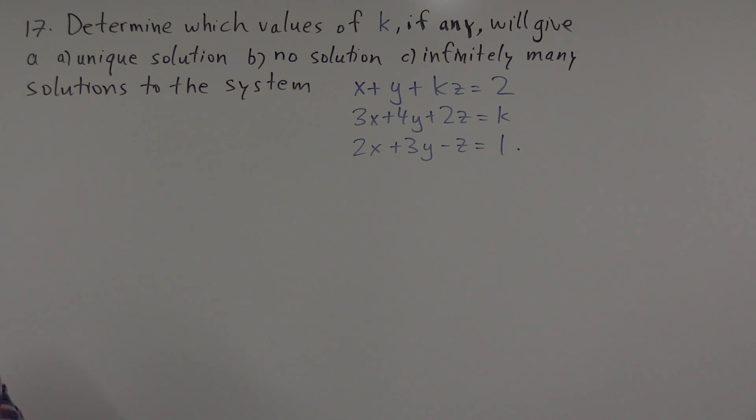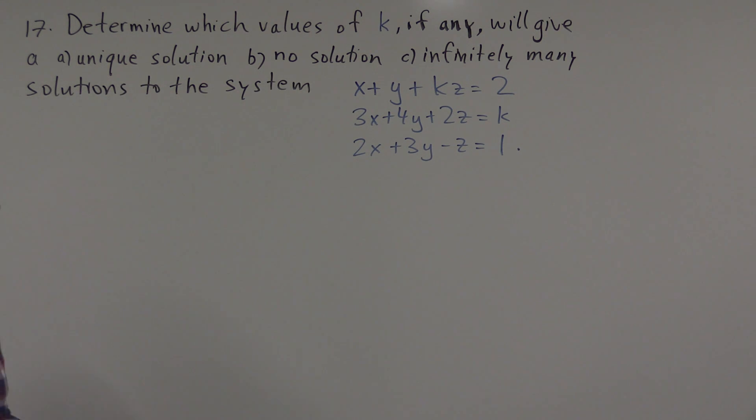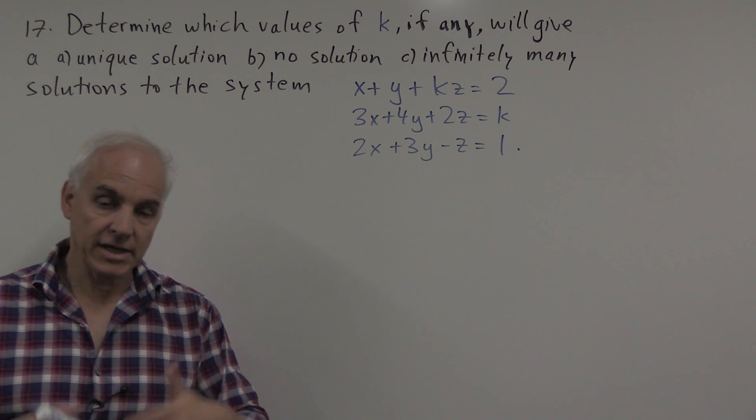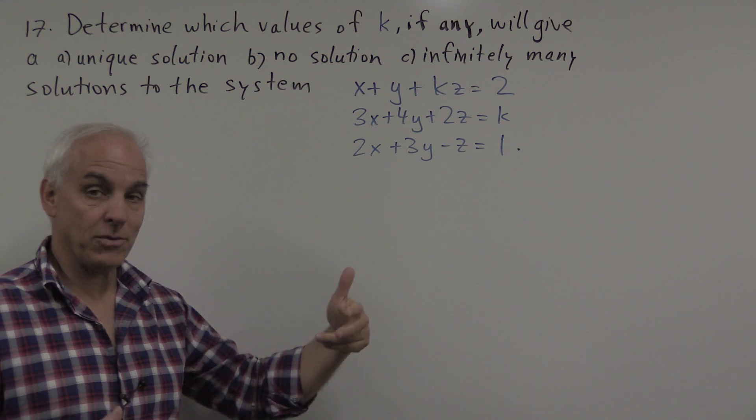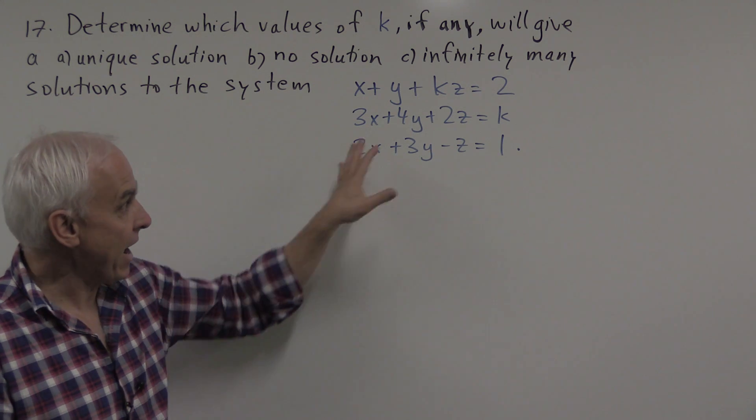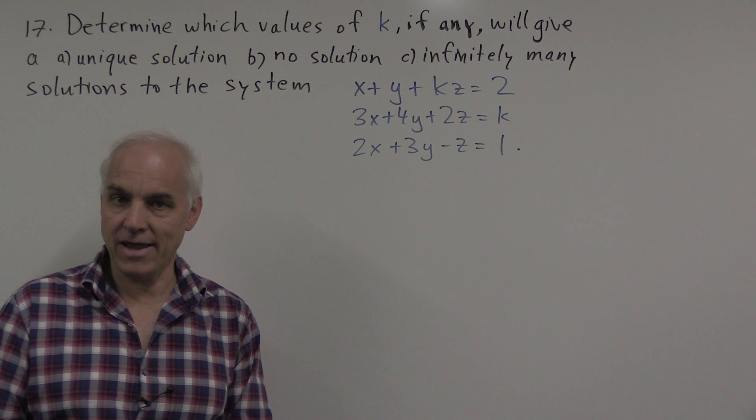This is problem 17 in Chapter 4 of our linear algebra notes. We're asked to determine which values of k, if any, will give either a unique solution, no solution, or infinitely many solutions to the following system of equations. It's a little bit more complicated than usual because here we have not just x, y, and z, which are the variables, but we have this unknown constant k, and how the solution pans out will perhaps depend on k, as we'll see.